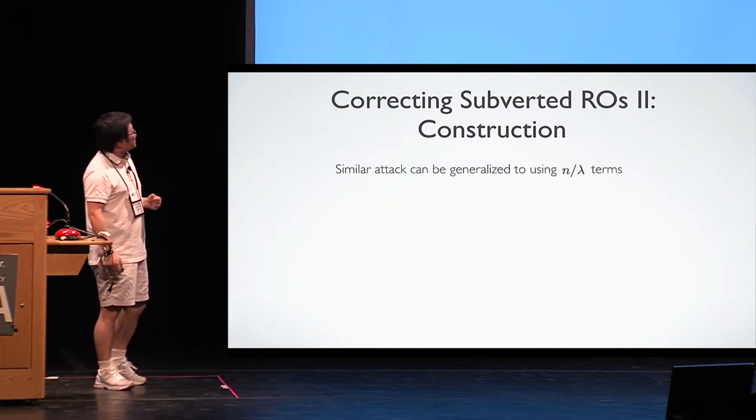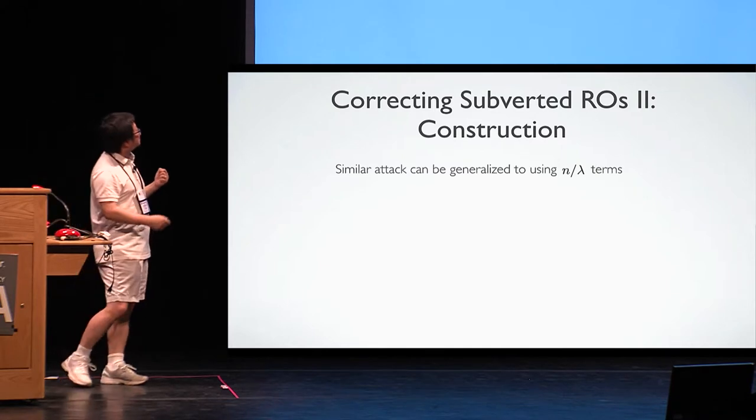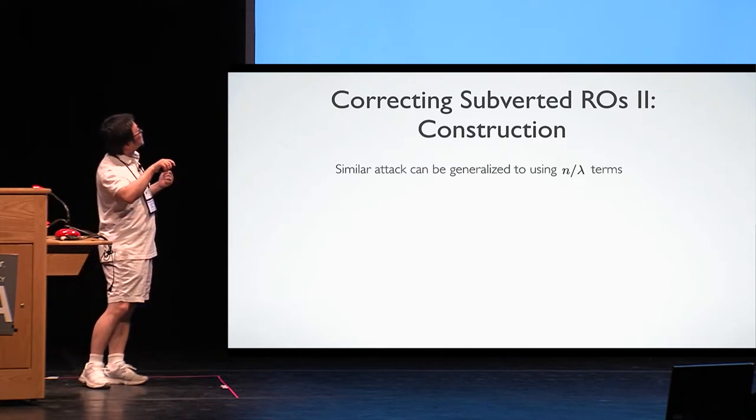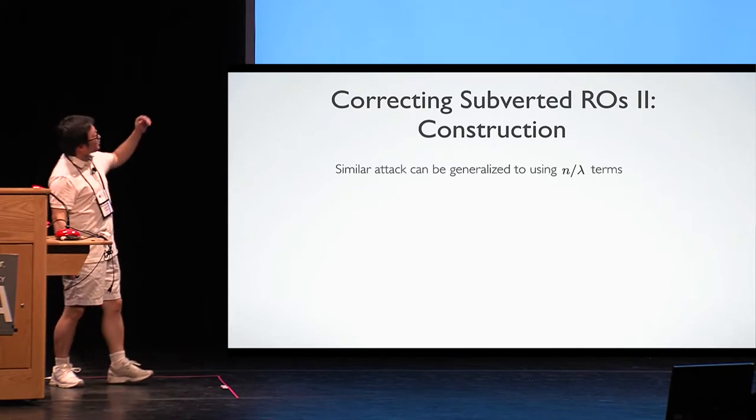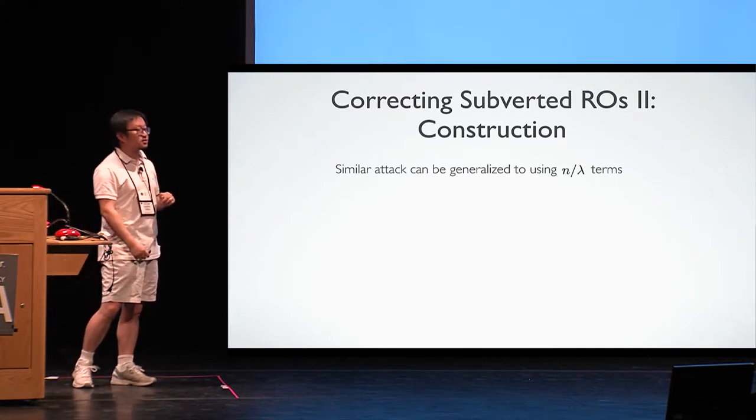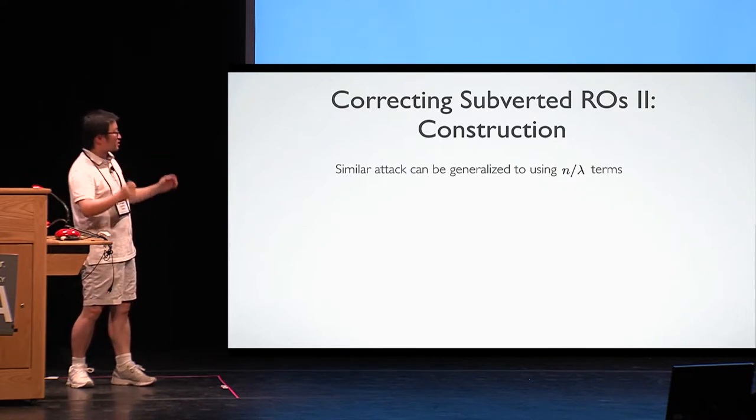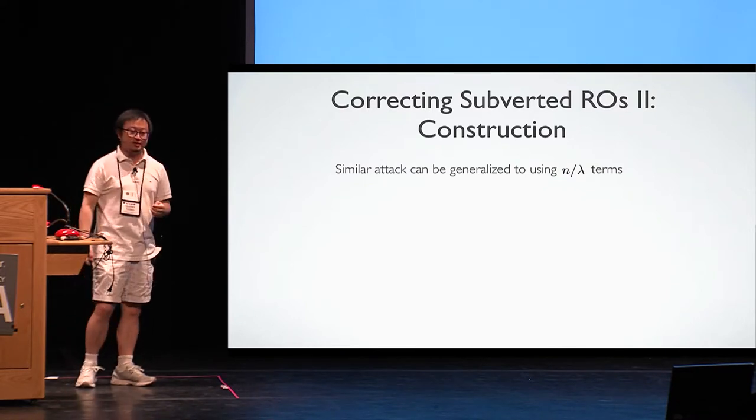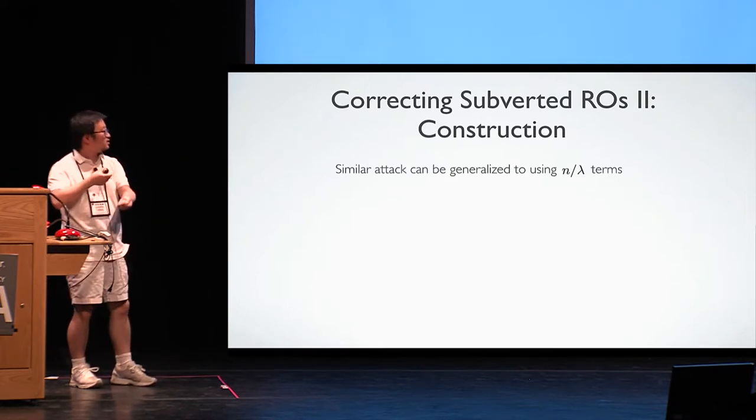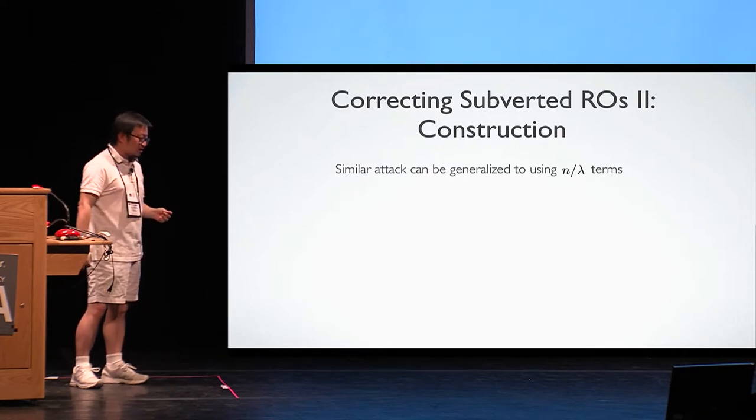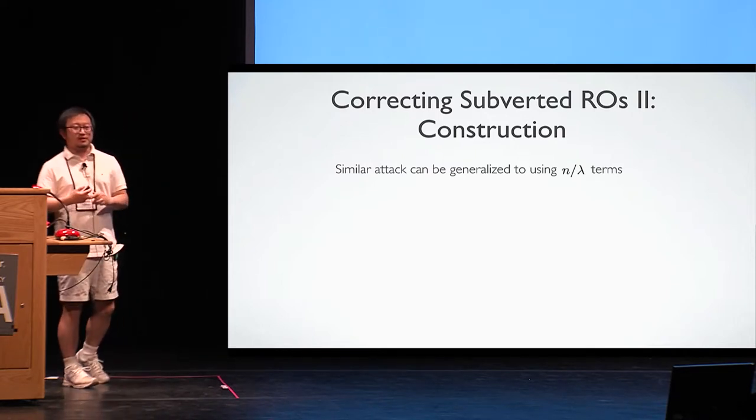What is worse is that this type of attack actually can be generalized even to... Suppose the length of the input is n. We can generalize this attack to n divided by security parameter, this many of terms. Even we shift and mix and shift using this many terms. The idea is actually very simple. We just cut the input into chunks and plant backdoor in each chunk. And still, the total number of backdoor still is exponentially small.